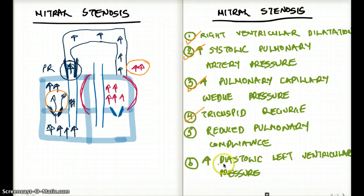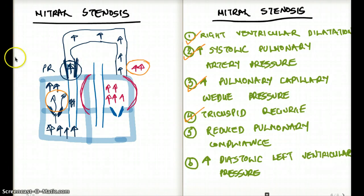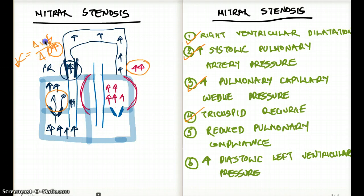What about reduced pulmonary compliance? With increased time, there is going to be more and more resistance in the pulmonary artery due to laminated medial hypertrophy. As a result, there is going to be reduced compliance. Compliance equals delta V divided by delta P. Reduced compliance means reduced change in volume — even though pressure increases, volume doesn't change, meaning the vessel becomes very stiff. That is going to happen.